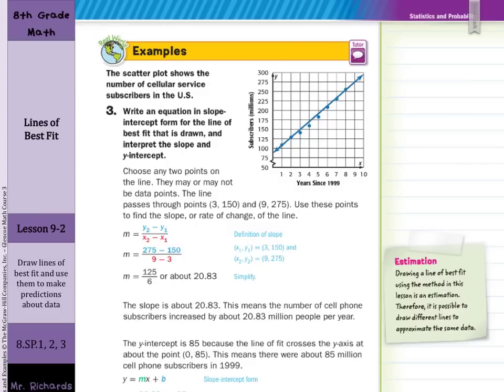In our third guided example, the scatter plot shows the number of cellular service subscribers in the US. Write an equation in slope intercept form for the line of best fit that is drawn and interpret the slope and y-intercept. Well the line's already drawn in. And so what we're going to do is pick two points. I would pick two points that the line passes through. And so we have 3,150 and 9,275. You can see where it crosses exactly through those points on the graph.